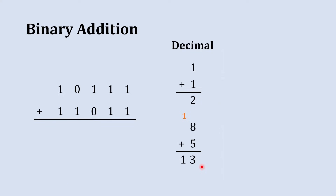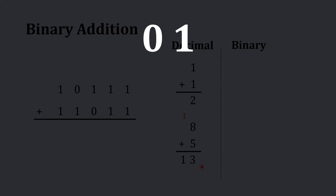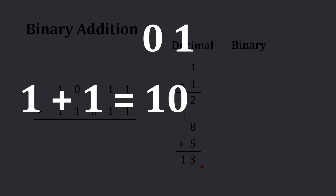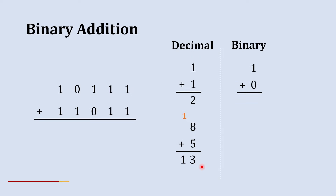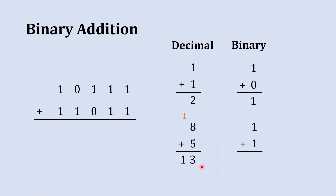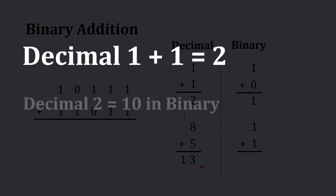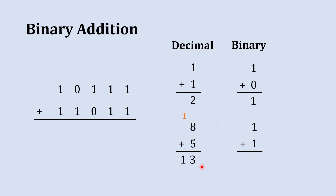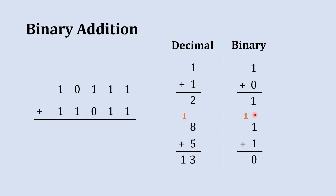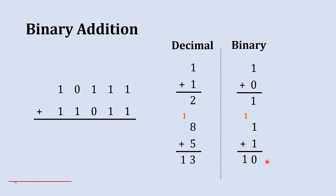The same logic applies in binary. In binary there are only two distinct digits, 0 and 1, so whenever the sum of two digits exceeds 1, a carry to the next column is generated. When we add 1 plus 1 in decimal we get 2, and the binary equivalent of 2 is 10. So in binary, 1 plus 1 gives a sum of 0 and a carry of 1. That 1 is in the 2's place, and adding it with 0 gives 1, so we get 10 as the result of 1 plus 1 in binary.